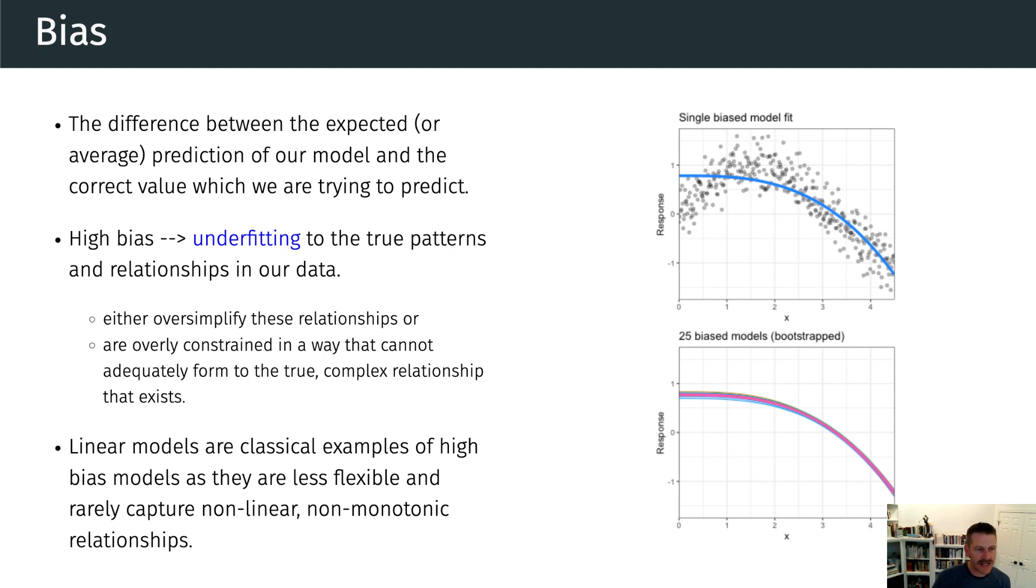Now, we also need to think of bias variance in relation to resampling. So models with high bias are rarely affected by noise introduced by resampling. So this bottom picture here basically shows this data, but it's been resampled with bootstrap sampling. And it's been resampled 25 times in each time we apply this model.